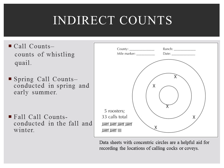Fall covey counts. Covey calls of bobwhites are often called wake-up calls. Covey calls are typically heard during the fall and winter, from October to March, in the early morning, about 30 minutes before official sunrise. Calling sessions are generally brief, lasting from 30 seconds to several minutes.